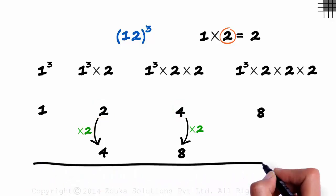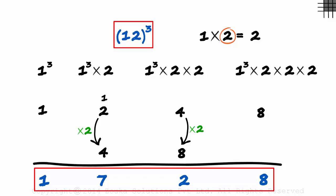Now we simply add the columns. 8, 4 plus 8 is 12. We write a 2 here and carry the 1 over. 1 plus 2 plus 4 is 7 and 1. That's the answer. 12³ is 1728.